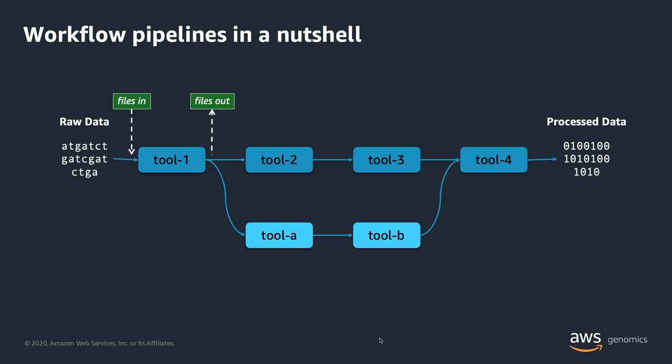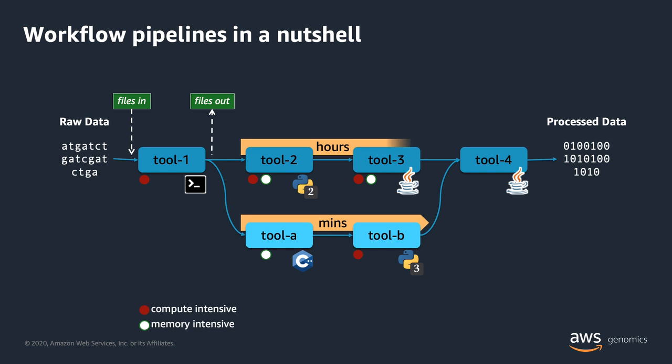Each of these tools expects a file as input and generates a file as output, and each tool in this workflow is unique. Some can be command line utilities, others could be Python scripts, others could be compiled programs like Java or C++. There are a lot of software dependencies to manage. Similarly, each tool has specific computational needs — some may be compute bound, others require lots of memory — and parts of the pipeline may run quickly while others run more slowly.